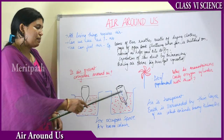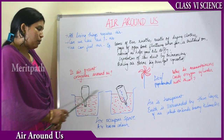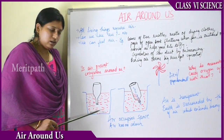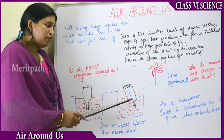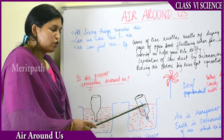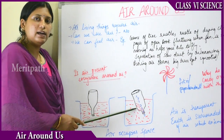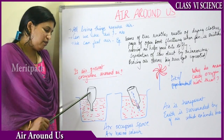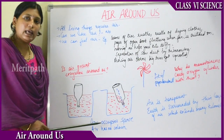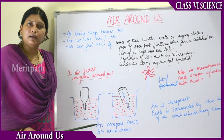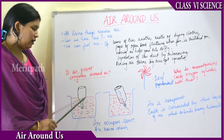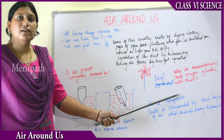We can conclude that air occupies space. The empty-looking bottle had its space occupied by air. When inverted straight, no space was given for air to escape, so water didn't enter. When inverted slantwise, air escaped and water entered with bubbles. Air has no color and is always transparent.